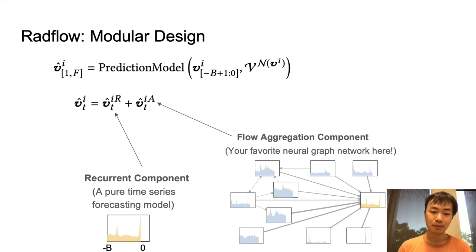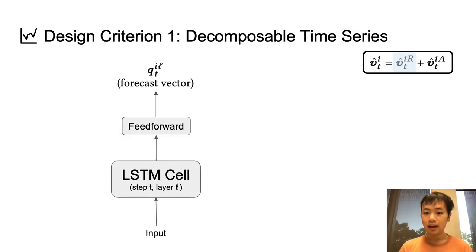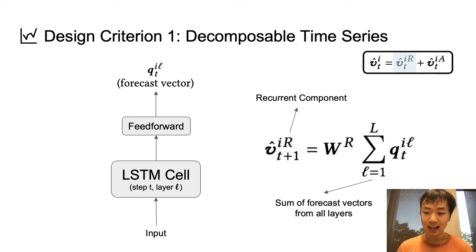Let us now zoom inside the recurrent component. So, we're going to use the LSTM model to encode the time series. At the same time, we also want to be able to decompose our time series predictions into simple parts. For example, one part might capture the trend, while another part might capture the seasonality. To do this, for each layer of the LSTM, we're going to feed the hidden state of the LSTM cell through a feedforward layer to obtain what we call the forecast vector. And the final prediction from the recurrent component will simply be the sum of the forecast vectors across all layers, and then projected down to the right number of dimensions.